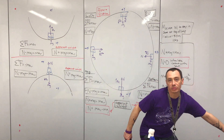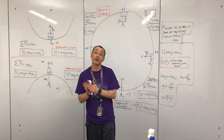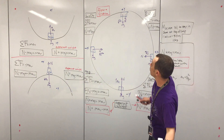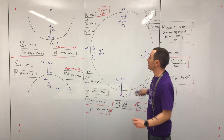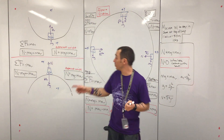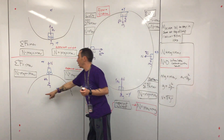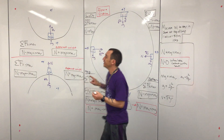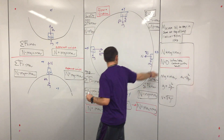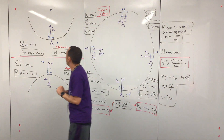Hi, how's it going? My name is Carl Bazel with the Learning Resources Center here at the University of Colorado Denver. Today we're going to be talking about free body diagrams and equations for dips, humps, and loops, and we'll solve a few problems. So let's get started.